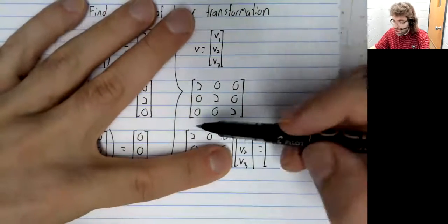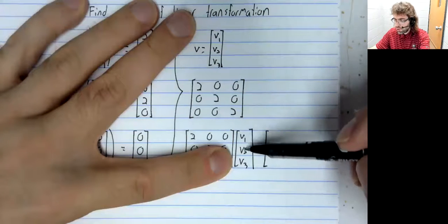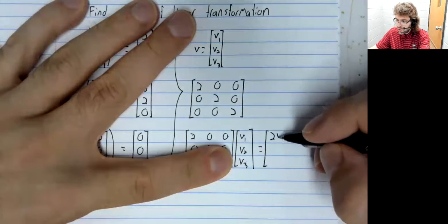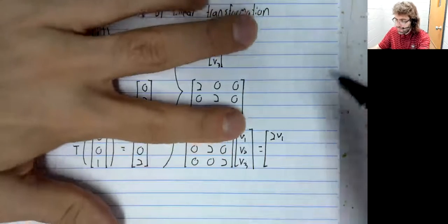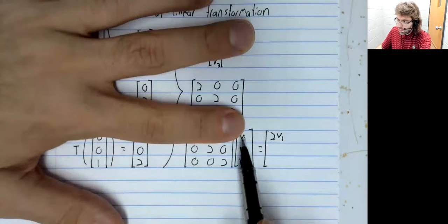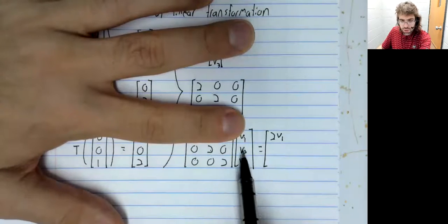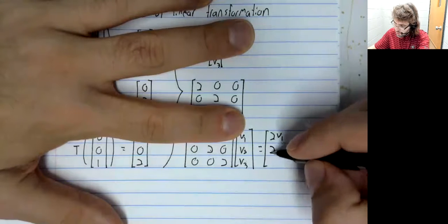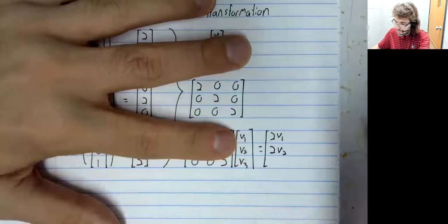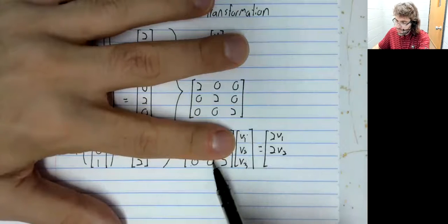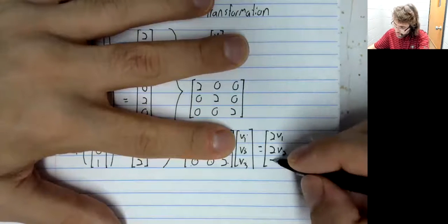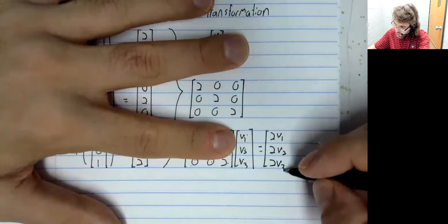Two V1, zero, zero. Zero, two V2, zero. Zero, zero, two V3.